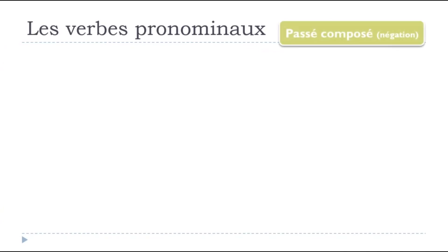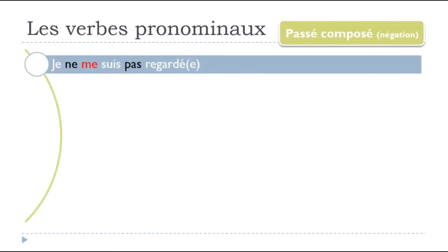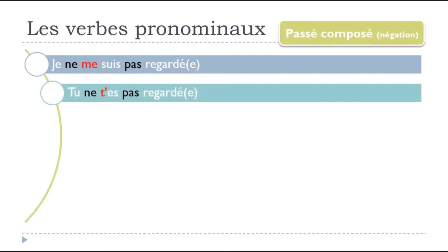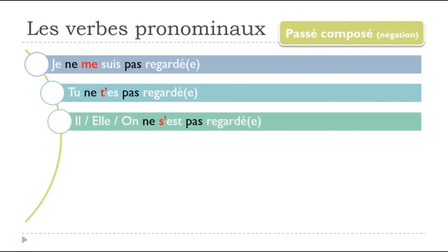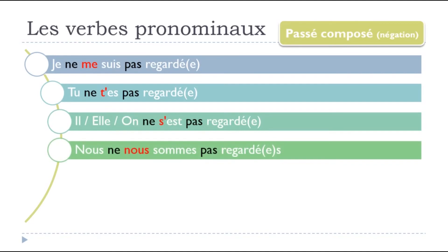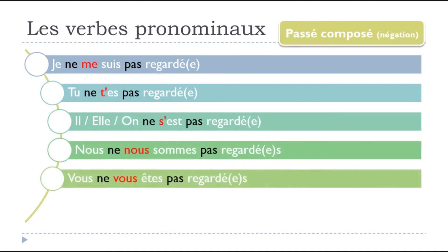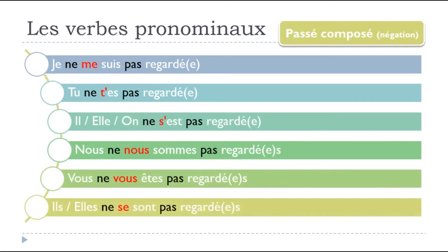Let's see how it works with le passé composé — same thing with the negative form. Normally it should be: JE NE ME SUIS PAS REGARDÉ. TU NE T'ES PAS REGARDÉ. IL, ELLE, ON NE S'EST PAS REGARDÉ. NOUS NE NOUS SOMMES PAS REGARDÉS. VOUS NE VOUS ÊTES PAS REGARDÉS. ILS, ELLES NE SE SONT PAS REGARDÉS. Those are the formal passé composé forms of SE REGARDER.